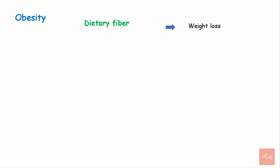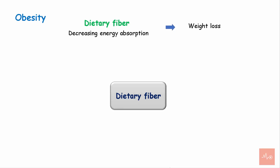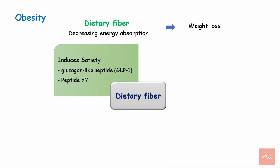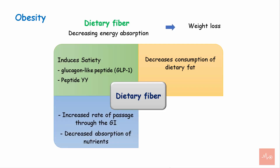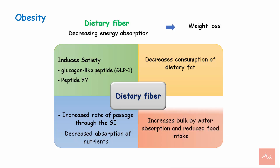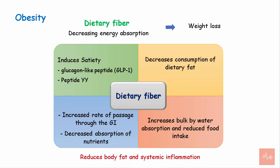Regarding the effect of dietary fibers on obesity: dietary fiber reduces energy absorption by the body. Fermentation of soluble fiber in the large intestine causes release of glucagon-like peptide and peptide YY, which induces satiety — a feeling of fullness. Another reason for reduced energy absorption is decreased consumption of dietary fat. Dietary fibers also increase the rate of passage through the GI tract, decrease absorption of nutrients, increase bulk in the gastrointestinal tract through water absorption, reduce food intake, and reduce body fat and systemic inflammation.